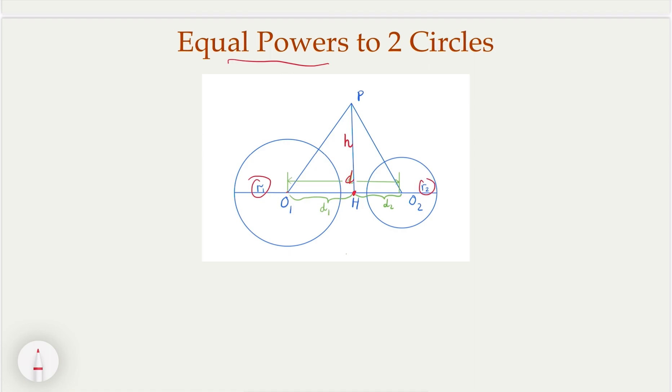By definition, the power is PO1 square minus R1 square equal, because we have equal power, so PO2 square minus R2 square. What is the PO square? PO square here is Pythagorean theorem H square plus D1 square. So D1 square plus H square. Similarly, PO square is H square plus D2 square, and H square cancels. So what we have is D1 square minus D2 square must equal to R1 square minus R2 square.